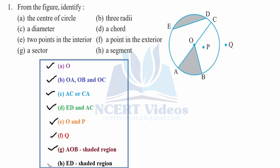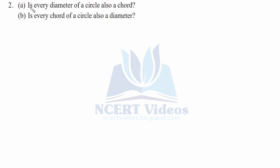Now the last part, H: the segment. A segment is formed by joining two points on the circle, or by a chord. The shaded region formed by the chord is your H part. So this was your first question. Second question: (a) is every diameter of a circle also a chord? (b) is every chord of a circle also a diameter?